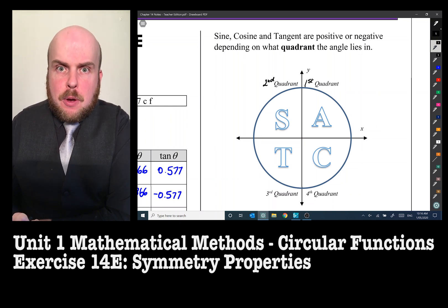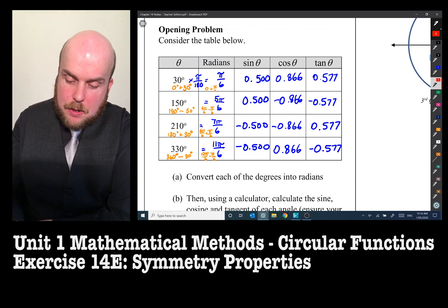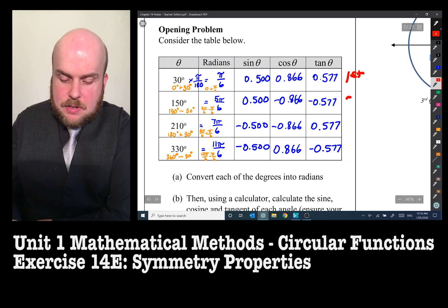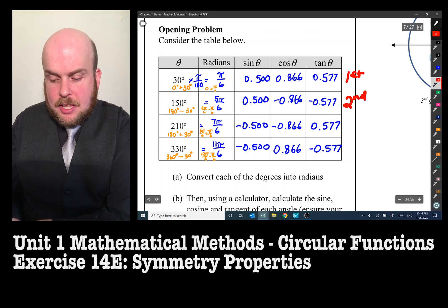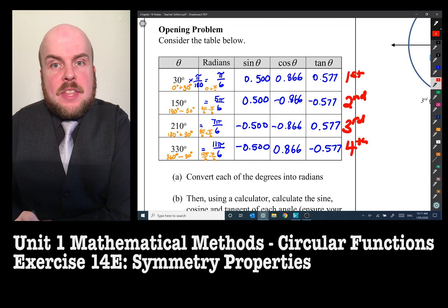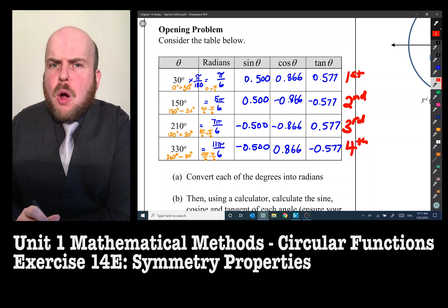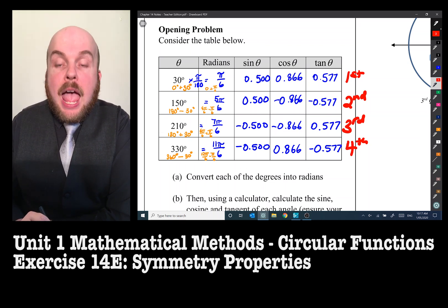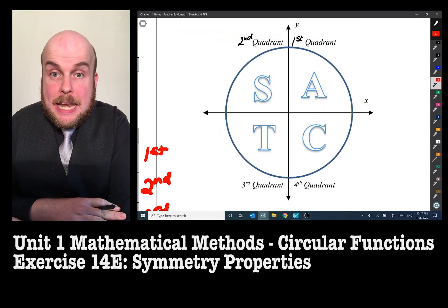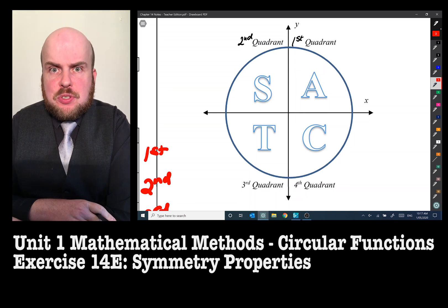We can confirm with our table. So the first row is in the first quadrant, the second row is the second quadrant, the third row is the third quadrant, and the fourth row is the fourth quadrant. You can see here in the first quadrant all of the numbers are positive. In the second row only the sine is positive. In that third row only the tan is positive. And in the fourth row only the cosine is positive. And this works no matter how many multiples of the circle you go in.